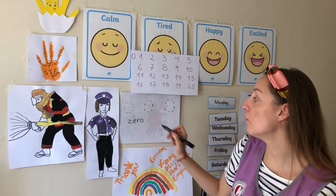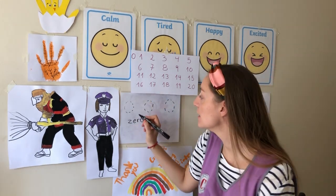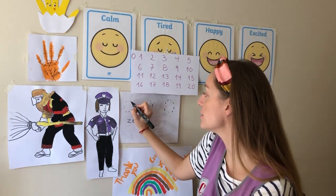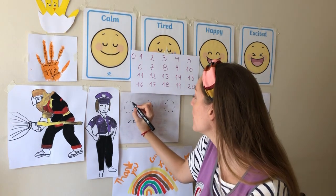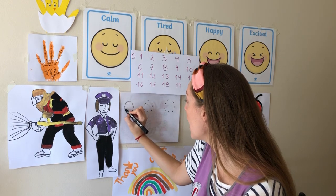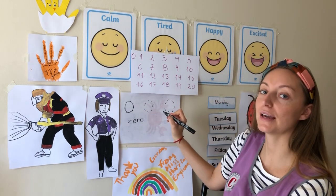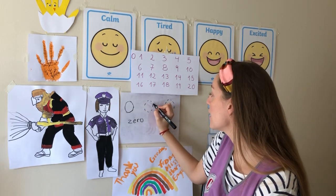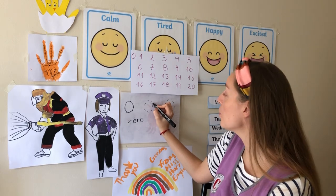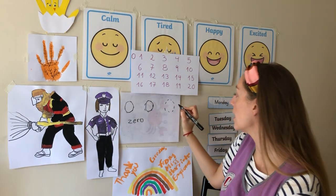Now we're going to have a look at how we write this number. First of all, we're going to start at the top and go all the way around, just like a circle. Let's try that a couple more times — go all the way around, just like that.